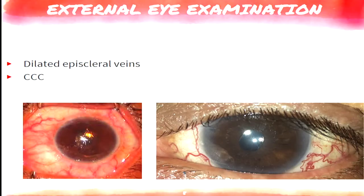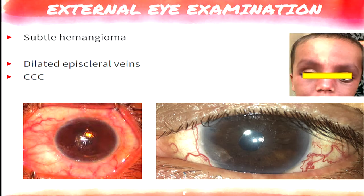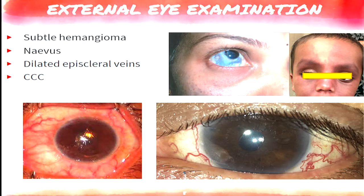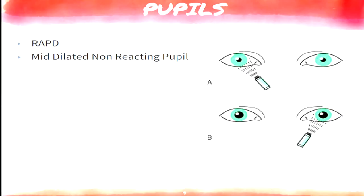Diffuse light examination is very, very important. Throw your torch on the face of the patient — you might see dilated episcleral vessels or a red eye in a patient with headache and vomiting, which suggests acute angle closure glaucoma. A child with capillary hemangioma might be a case of Sturge-Weber syndrome, or a patient with a certain nevus might be a case of nevus of Ota. Do an external eye examination and simultaneously check pupillary reaction, as advanced glaucomatous optic neuropathy may show a relative afferent pupillary defect.